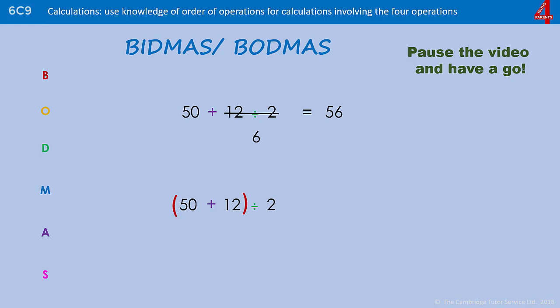What about the second one? This time 50 add 12 is in the brackets, so we need to do that first. 50 add 12 is 62. 62 divided by 2 is 31, and again we have two very different answers.